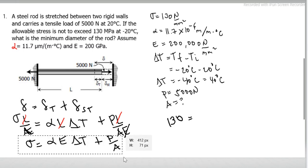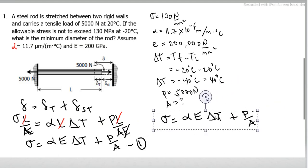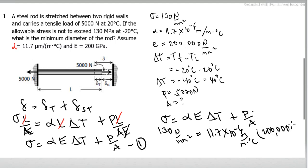So 130 is equal to... let's copy this. 130 Newton per mm squared equals 11.7 times 10 to the negative 6 meter per meter degree Celsius, times modulus of elasticity of 200,000 Newton per mm squared, times...